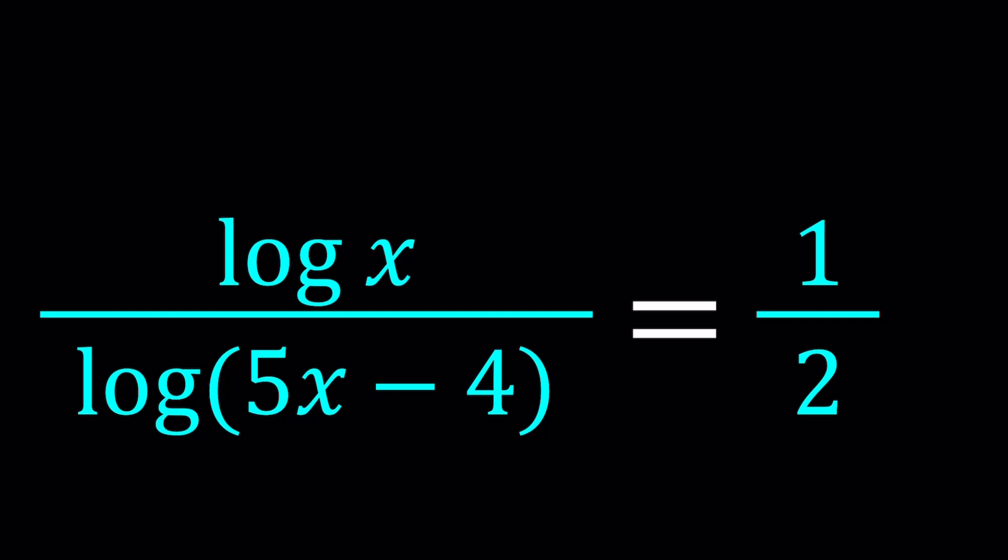We have log x with base 10 divided by log 5x minus 4 with base 10. I keep saying it because I want to make sure that you do not misinterpret this as the natural log, because I use ln for natural log. I think everybody should use ln for natural log, including Wolfram Alpha. You need to distinguish between these. We don't write base 10 when we express numbers in base 10. We shouldn't be writing base 10 in logs either. Anyways, that's my quick rant. Let's get to the problem.